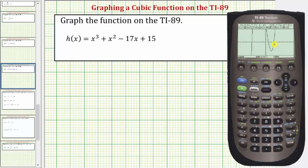Now looking at the graph, notice how this window isn't too bad. We can see this relative minimum here, but what we can't see is a relative maximum somewhere up here. So let's adjust the window manually by increasing the y maximum. Notice how we can also increase the x minimum and decrease the x maximum. For the window, we press diamond F2.